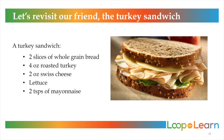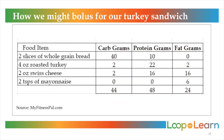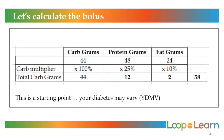Let's revisit our friend the turkey sandwich and walk through this together. Here's the turkey sandwich: 2 slices of bread, 4 ounces of turkey, 2 ounces of swiss cheese, lettuce, and 2 teaspoons of mayonnaise. Entered into the app MyFitnessPal, we see this meal is 44 carbs, 48 grams of protein, and 24 grams of fat. Now let's calculate the bolus. Based on the percentages we just talked about, we now have 44 grams of carbs, 12 protein grams, and 2 fat grams.